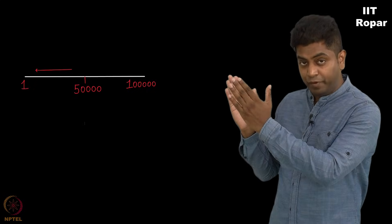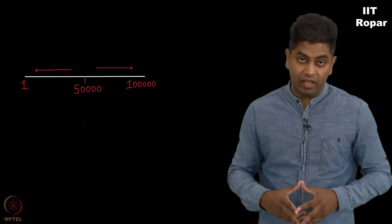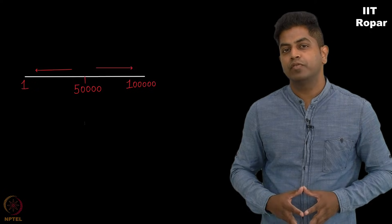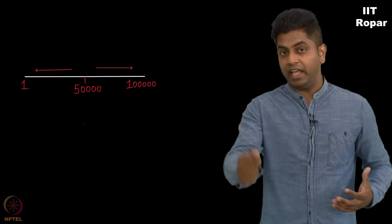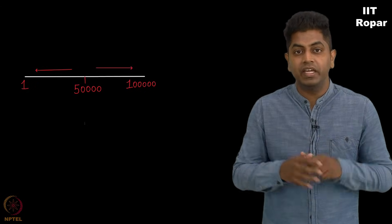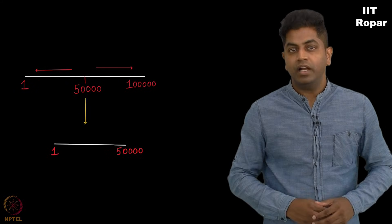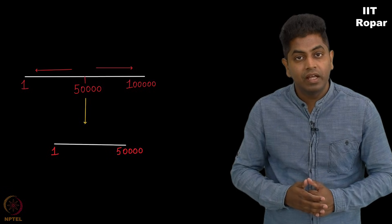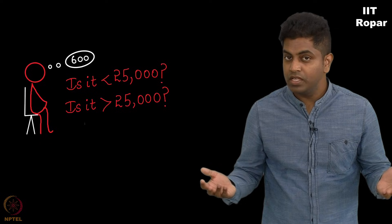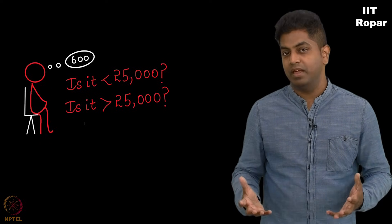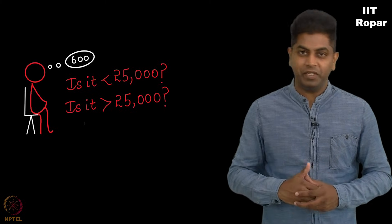If your number is in the first half, you will say it is less than 50,000. If your number is in the second half, you will say it is greater than 50,000, and there I know for sure I can now reduce my search space by half. Now I will ask you, is your number less than 25,000 or greater than 25,000? Do you see that this method is exactly the same as searching through an English dictionary? Let us now go ahead and try to write a piece of code for this.